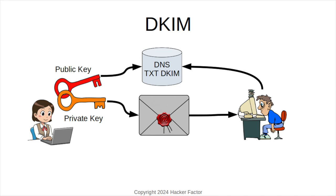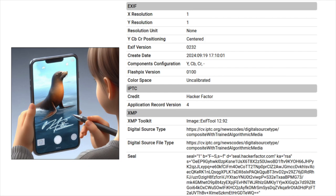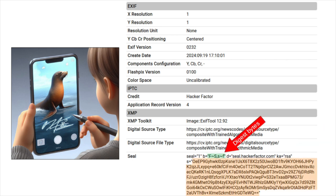But why limit it to email? SEAL extends the exact same battle-tested solution to any kind of media: pictures, videos, audio files, documents, whatever. Here's a picture with a signed SEAL record. There's the cryptographic signature. This is the byte range for generating the signed digest — in this case, it's from the start of the file to the start of the signature, and from the end of the signature to the end of the file.